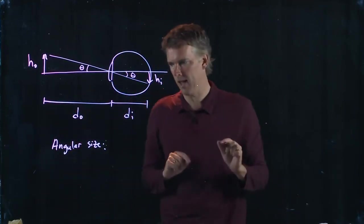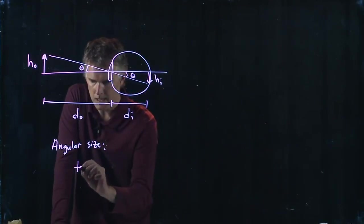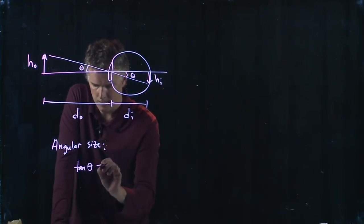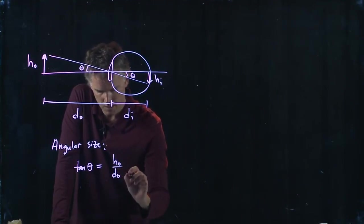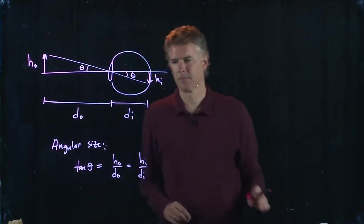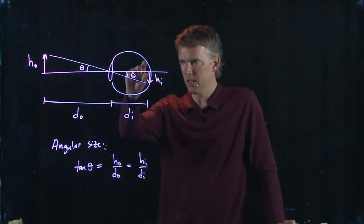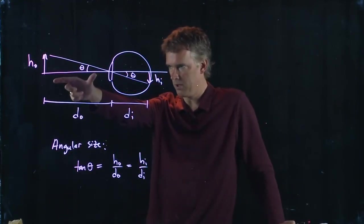theta there is exactly the same as angle theta there. And so we can write the following: tangent of theta is h_o over d_o, or h_i over d_i. Right, tangent is this side of the triangle over this side of the triangle, h_o over